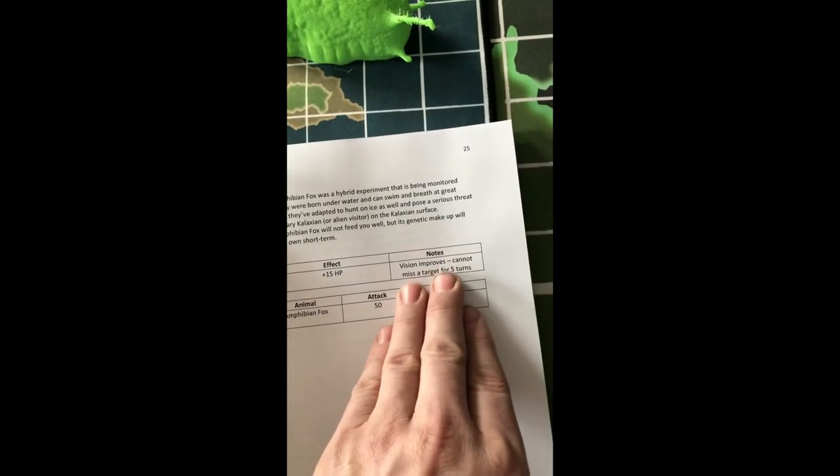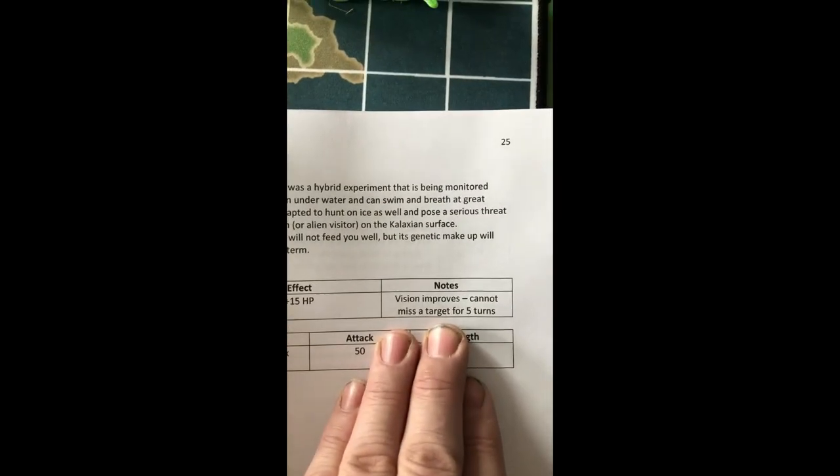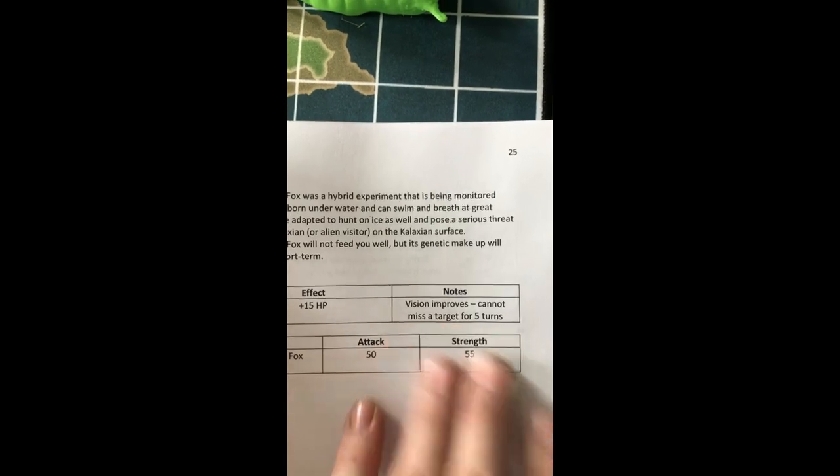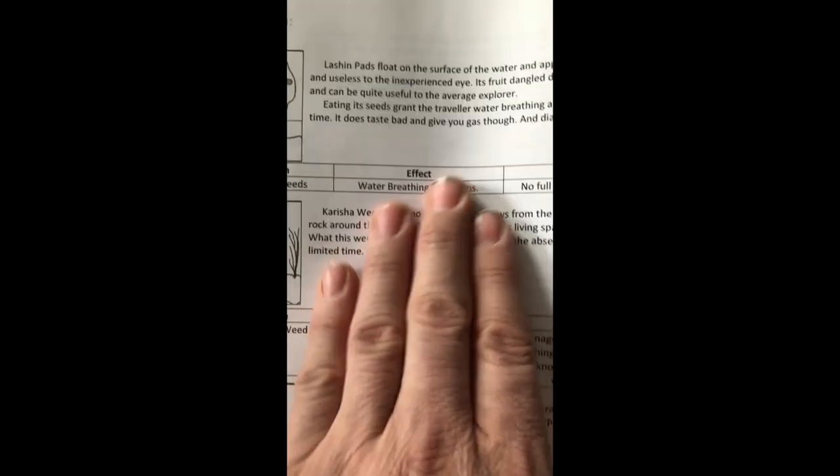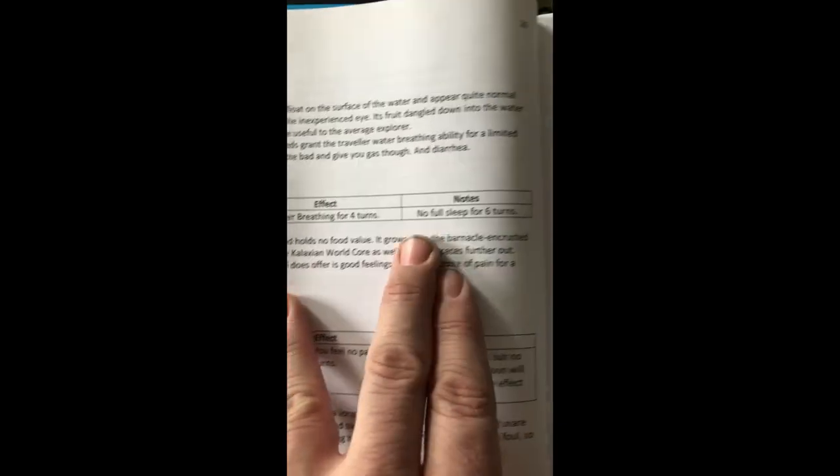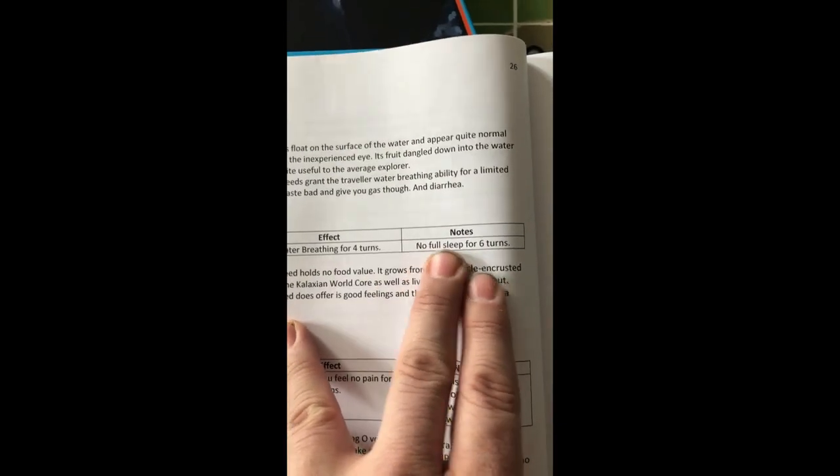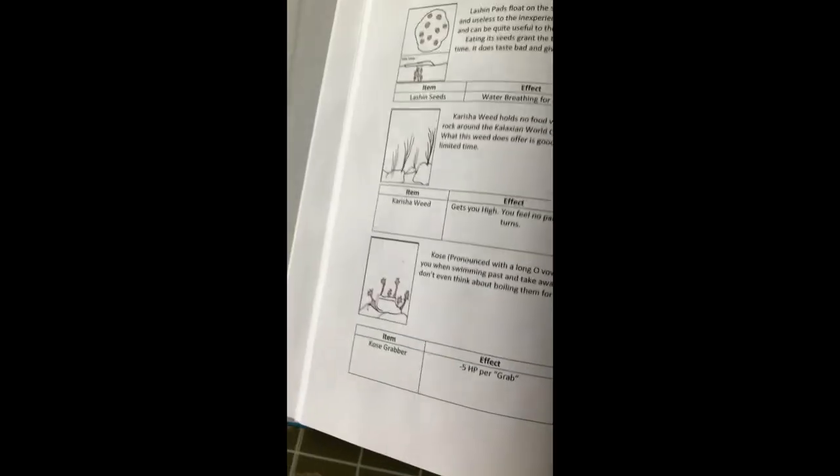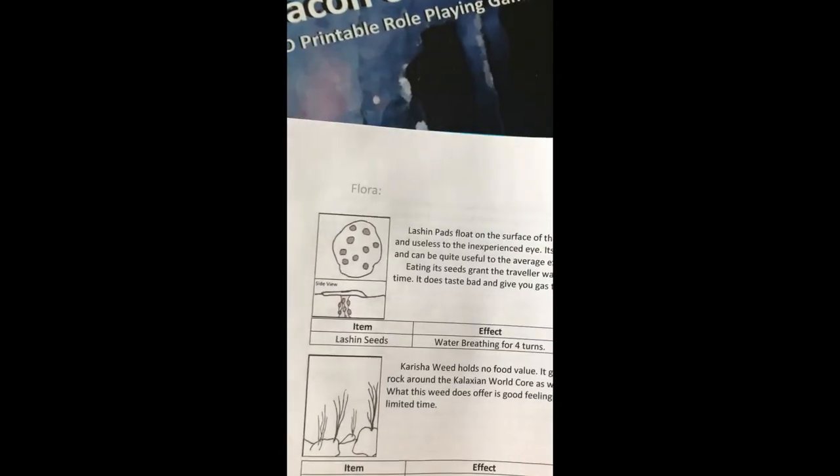It has that. Some of these have the effect where your vision improves. Cannot miss, it's harder for five turns. So that's if you're harvesting it. That's what you do. For these, water breathing for four turns. So if you harvest it, but you can't get a full sleep for six turns. There's consequences. We are into the flora now.